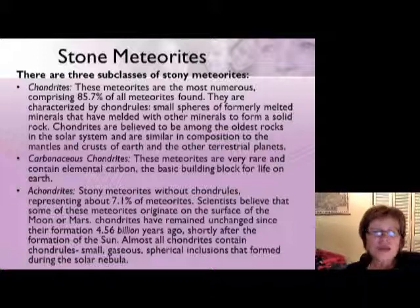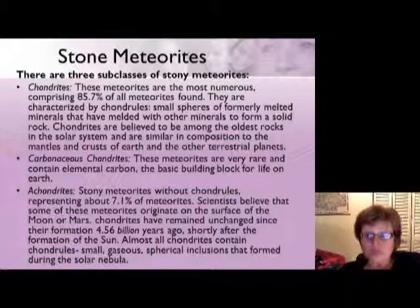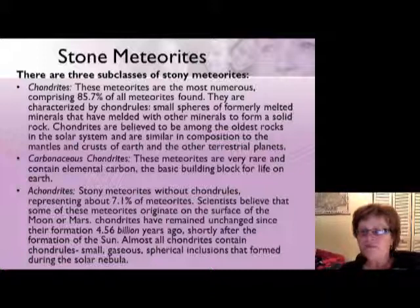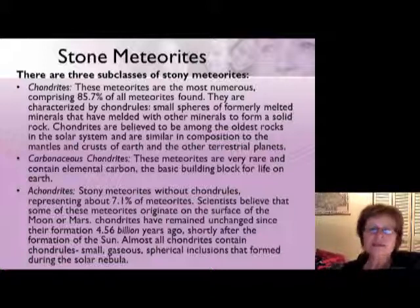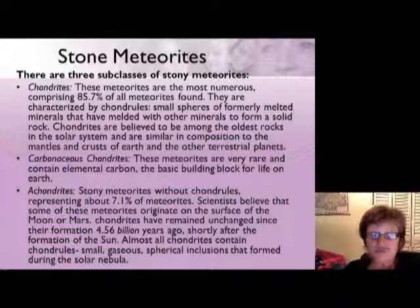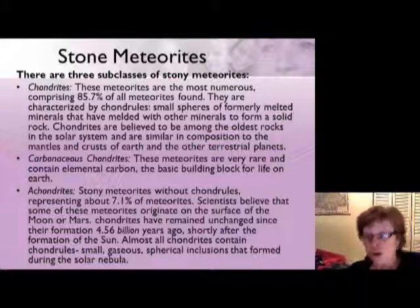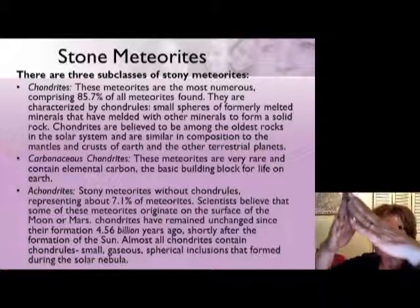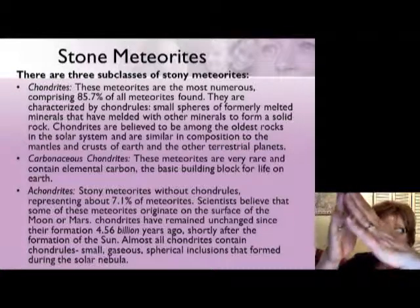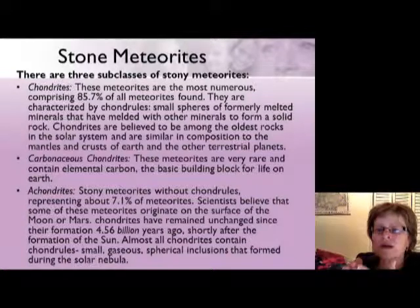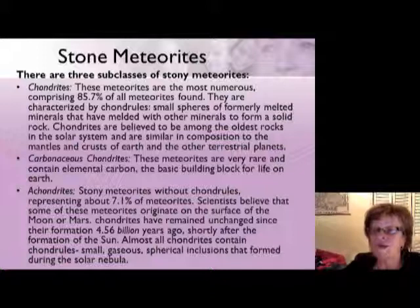Then we have carbonaceous chondrites, which are very rare but extremely important because they contain carbon. Many scientists think life on Earth may have started from carbon brought in by meteorites, making these very significant. The last type is the achondrite — stony meteorites without chondrules, about 7.1 percent of all meteorites. Some geologists believe these may have come from the Moon or Mars, based on the angle of impact and mapped trajectories.